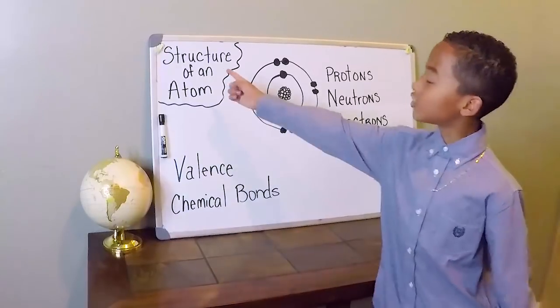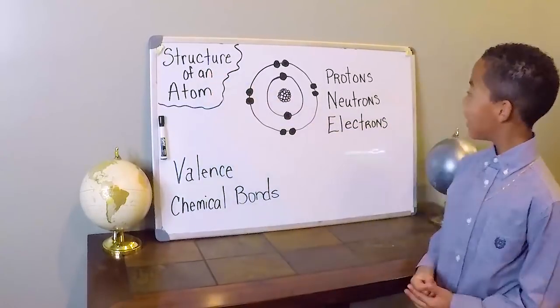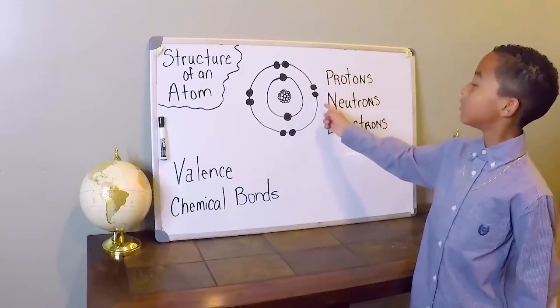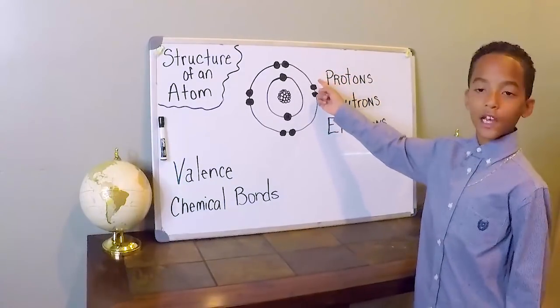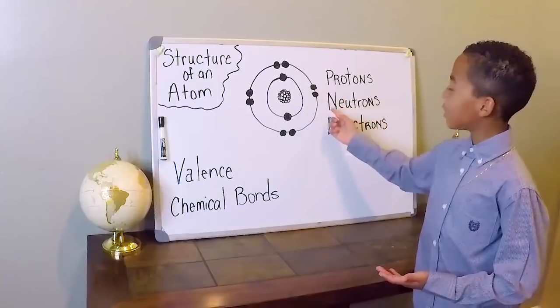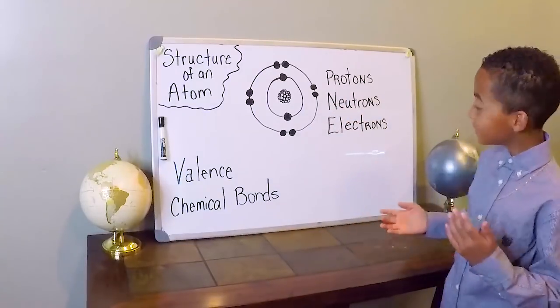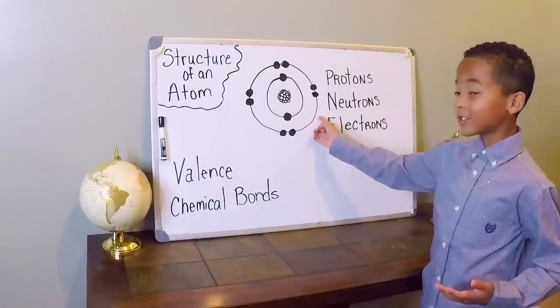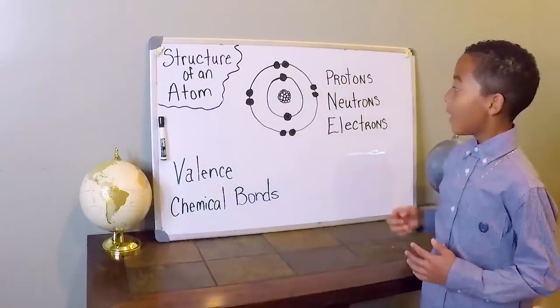Today we're going to be talking about the structure of an atom. The nucleus contains the protons and neutrons. The protons have a positive charge and the neutrons don't have a charge. The electrons have a negative charge and they also orbit the nucleus.